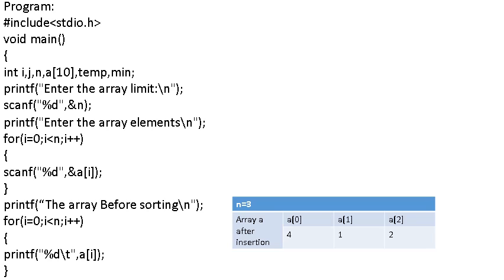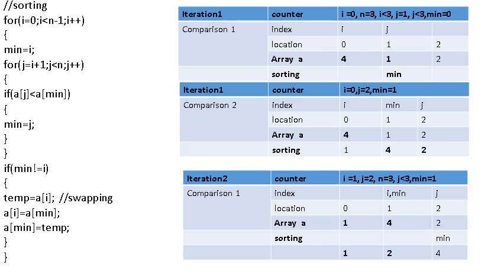The array limit is 3. Before sorting, the contents of the array are displayed using a for loop. For the sorting, the outer for loop runs for i equal to 0, i less than n minus 1, i plus plus — this specifies the number of times we scan the array. With n equal to 3, i runs from 0 to 1. Inside, minimum is set equal to i, taking the first element as the minimum.